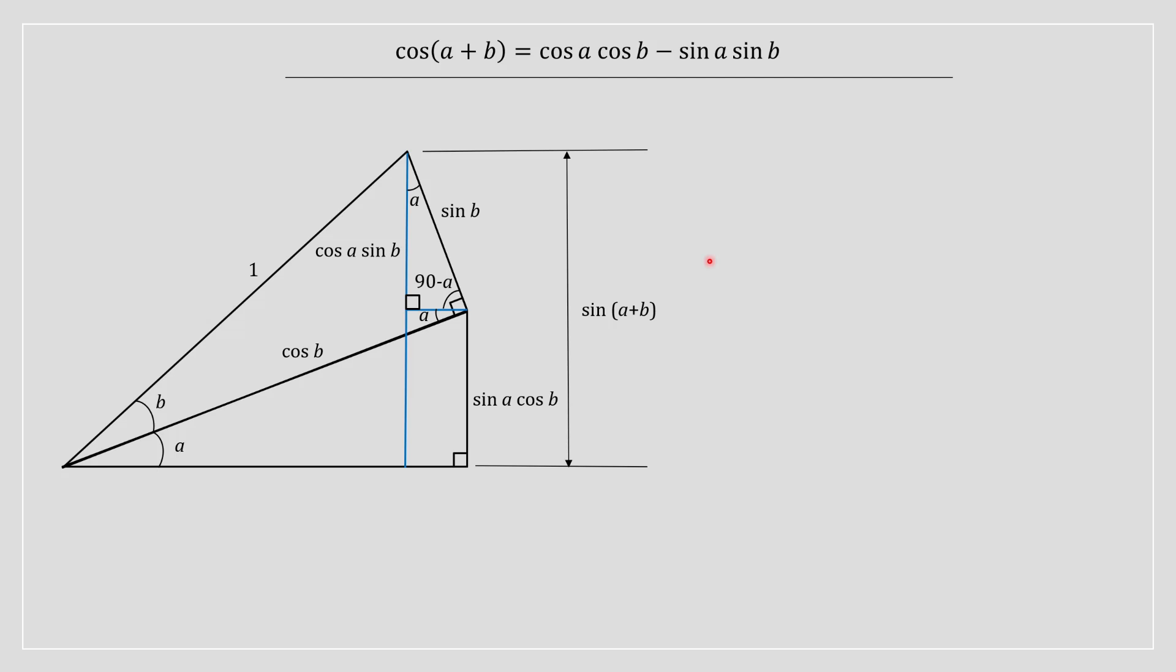Right, so in the last video, we looked at sin a plus b. And basically, the only difference here is that cos a plus b builds off sin a plus b. So we're still going to need to use this triangle over here, but there's going to be some additional steps.